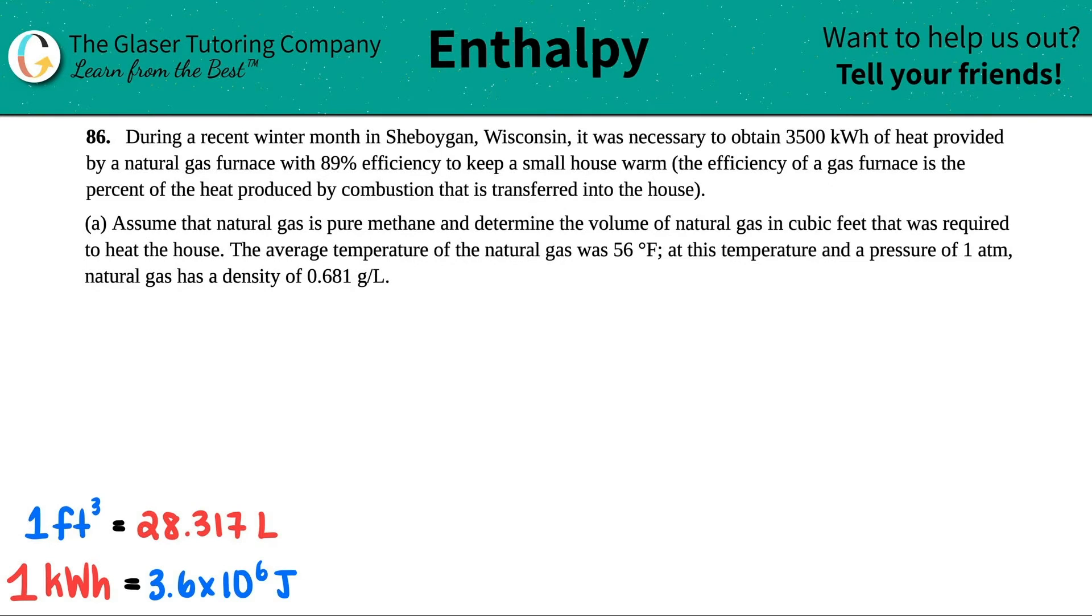Number 86. During a recent winter month in Sheboygan, Wisconsin, it was necessary to obtain 3,500 kilowatt hours of heat provided by a natural gas furnace with 89% efficiency to keep a small house warm. The efficiency of a gas furnace is the percent of the heat produced by combustion that is transferred into the house.